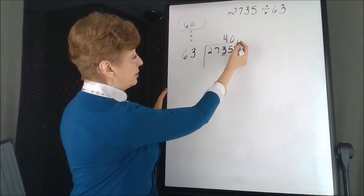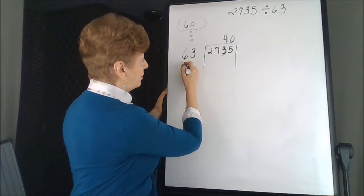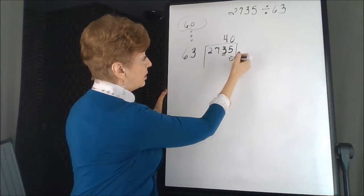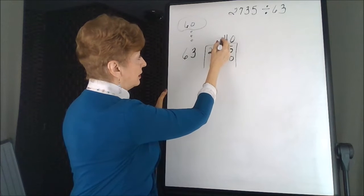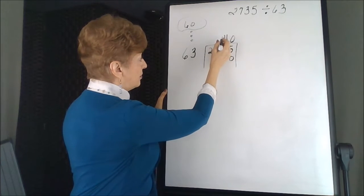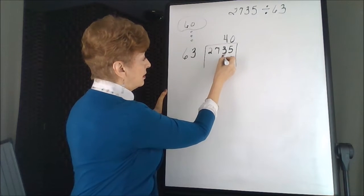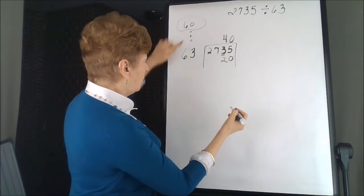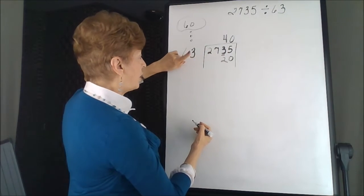Now we're going to do the multiplication back. Anything times 0 is 0. So we're done with this one. Now 4 times 3, I'm doing 4 times the ones column, is 12. I'm carrying 1. 4 times 6 is 24, and 1 more is 25.